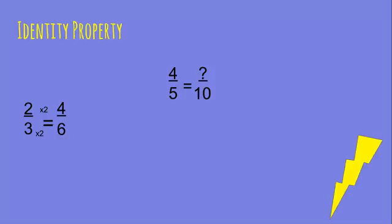We are also going to multiply two times two when we are multiplying the same number, and that equals four. So two-thirds equals four-sixths.